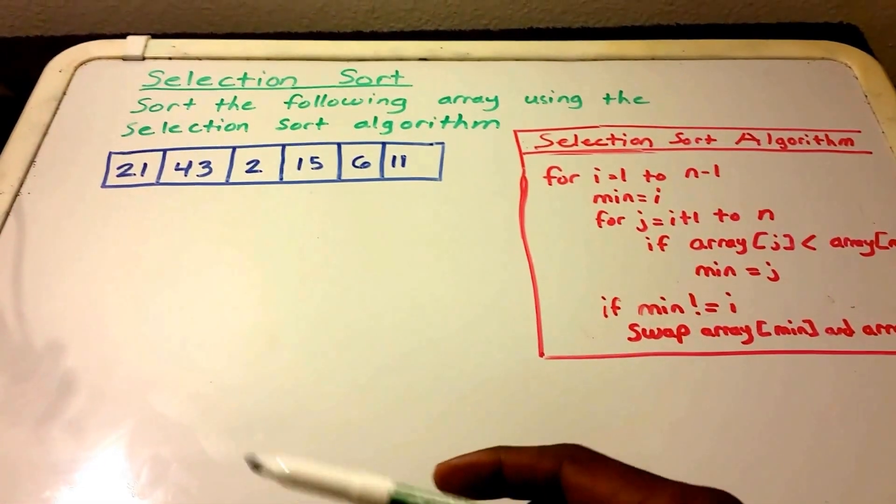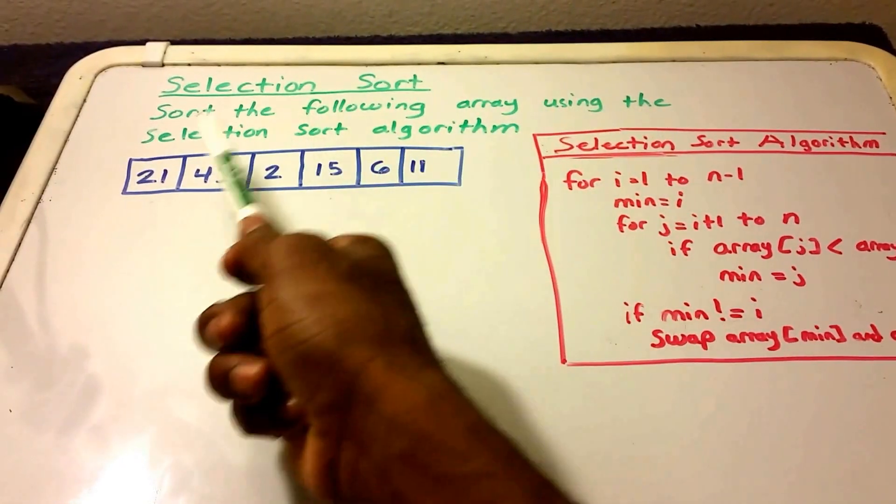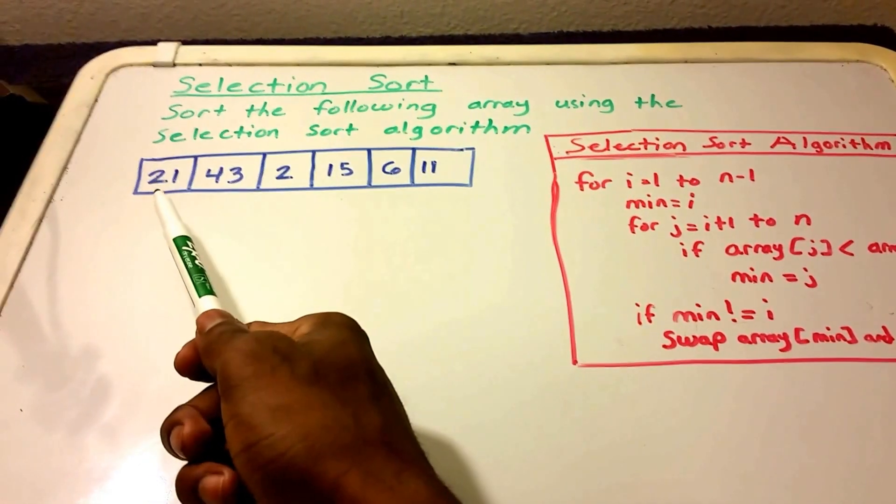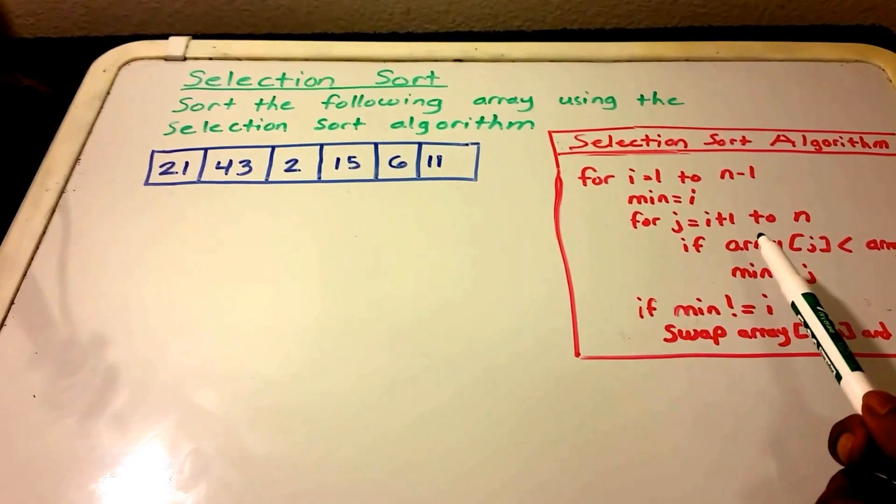Hey guys, in this video, I'm going to talk about the selection sort algorithm. So we want to sort the following array using the selection sort algorithm. And here I have the array in blue. And I have the algorithm here in red for selection sort.